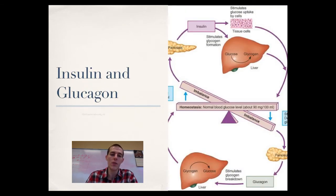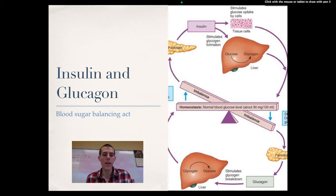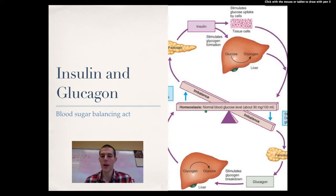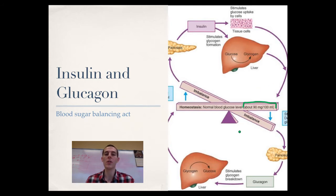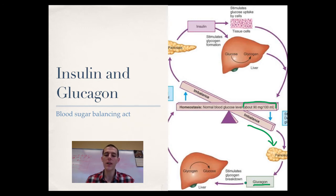One of the best recognized examples of an antagonistic pair is insulin and glucagon, responsible for balancing our blood sugar. Normally you should have about 90 milligrams of glucose per 100 milliliters of blood. If blood sugar is low — say after a workout — low blood sugar stimulates the pancreas to secrete glucagon, which stimulates the liver to break glycogen down into glucose. That breakdown puts glucose into the bloodstream, which restores blood sugar and shuts down the process — negative feedback.